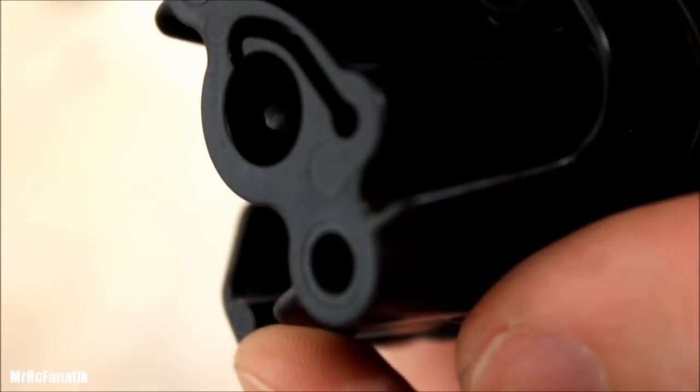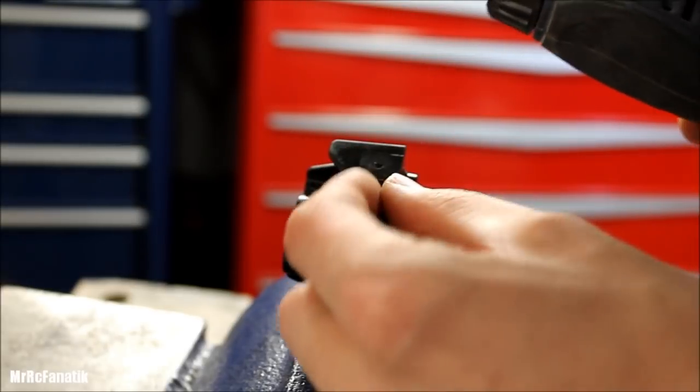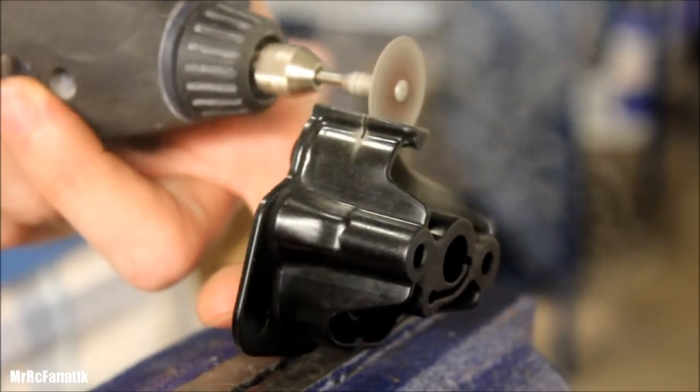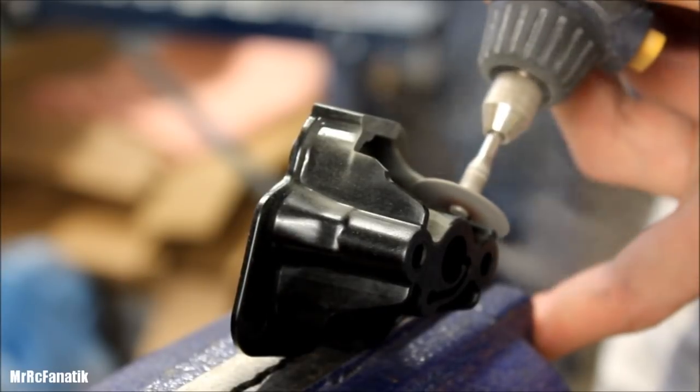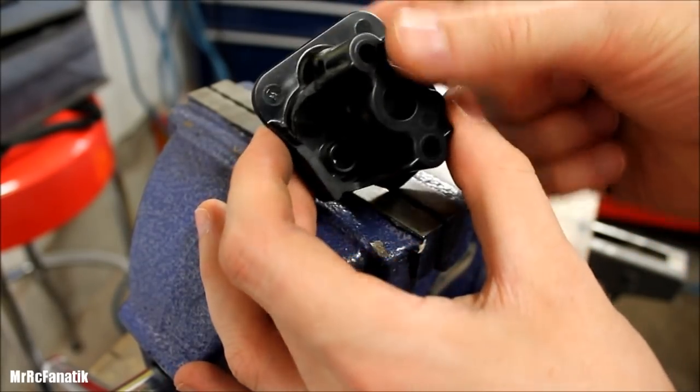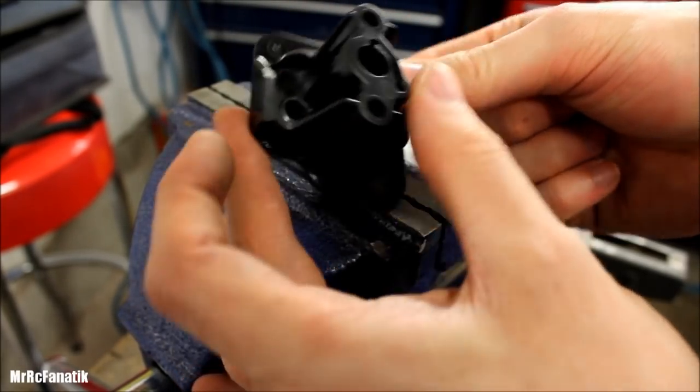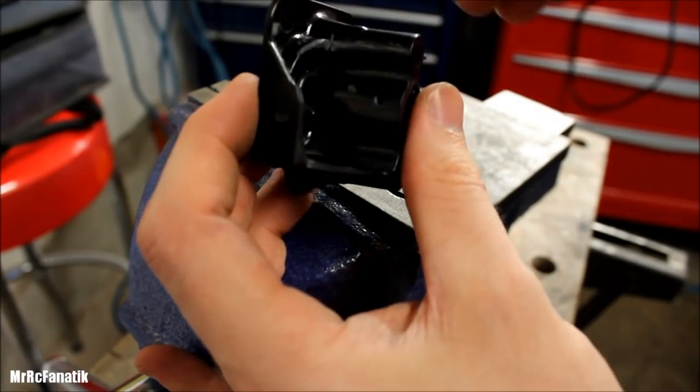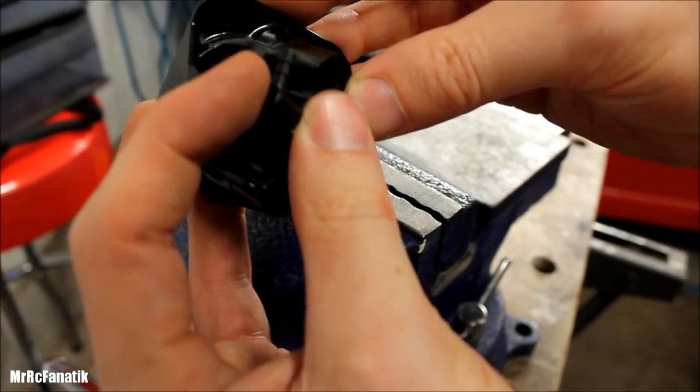I'm now just going to take this Dremel with a cutting disc on the end, just remove some of this excess plastic which is going to be in the way when we're threading in the T-piece. All right, so just Dremeled off this edge here and this edge here, and just tidied them up with a grinding stone. So we have plenty of room. You can see the hole right there. Now have plenty of room to screw in the 90 degree fitting. You can see plenty of room there and plenty of room all around.